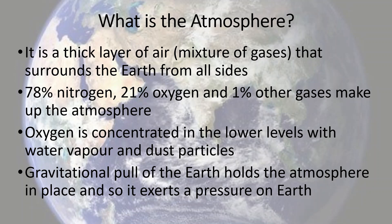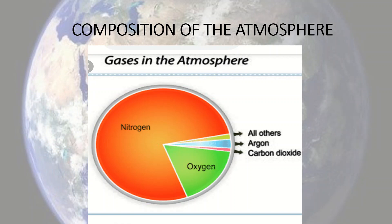The gravitational pull of the earth holds the atmosphere in place, and the atmosphere exerts a pressure on earth due to this gravitational pull. In this pie chart, you can see that nitrogen and oxygen take up the majority of space, whereas the other gases take up only a small amount.